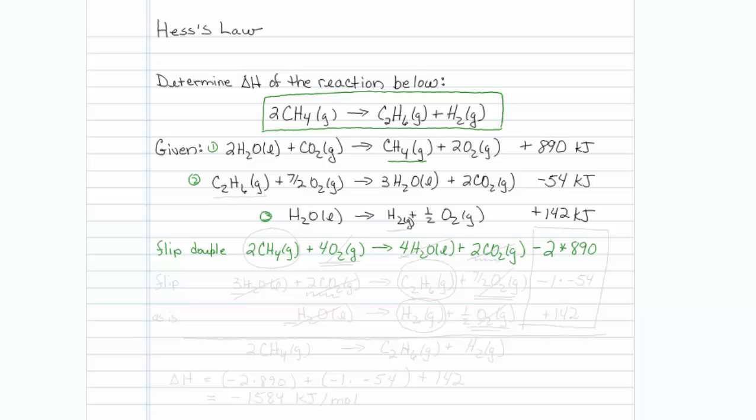The next thing I would like is to have C2H6 on the product side, but I'm given a reaction where it's on the reactant side. Coefficient of one is fine, so looks like I need to flip reaction two, so I will write it backward. C2H6 gas plus seven halves O2 gas, and on this side, 3H2O liquid plus two CO2 gas. I have flipped it, so I will take a minus one times the minus 54.